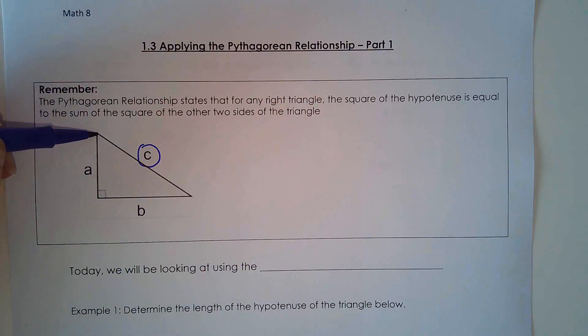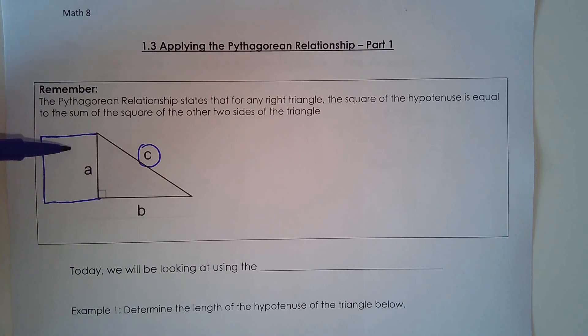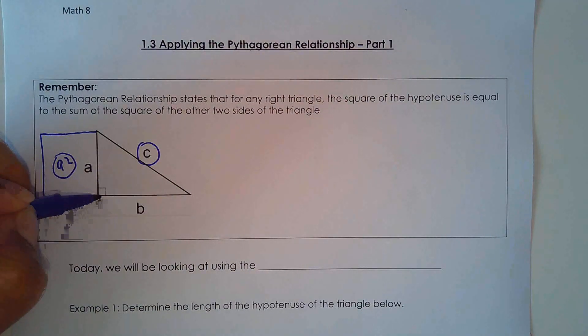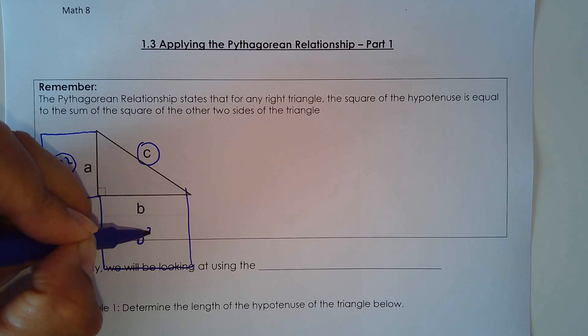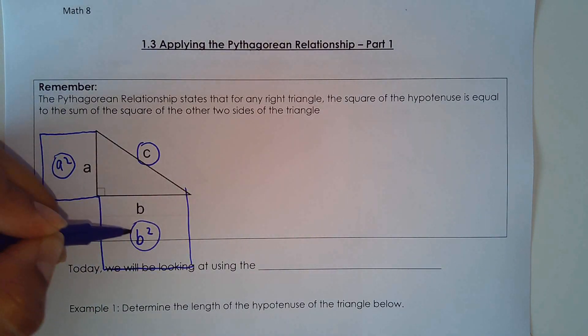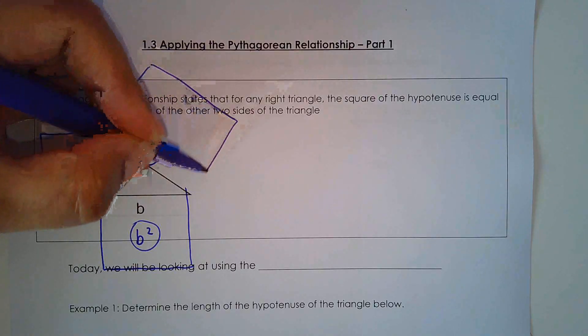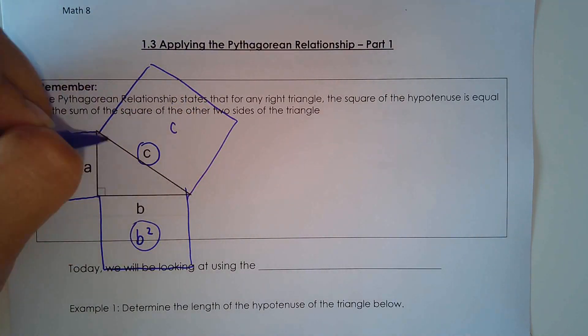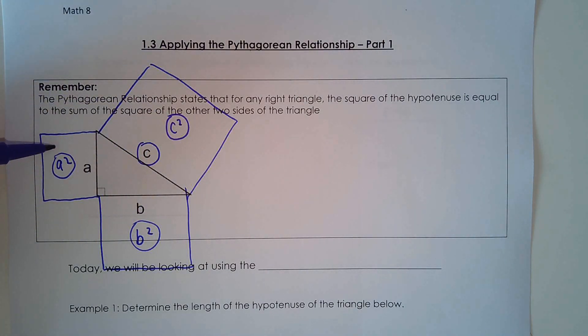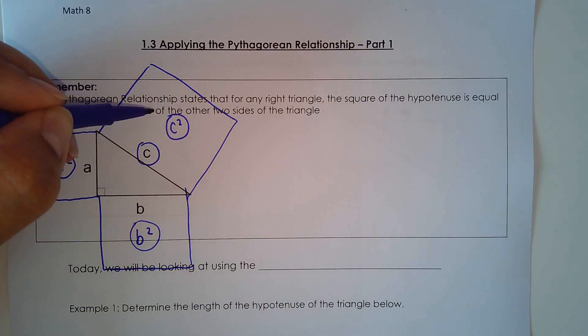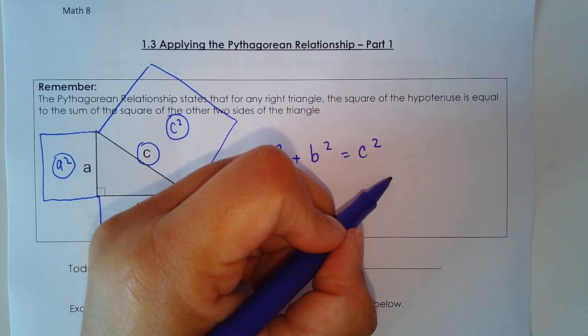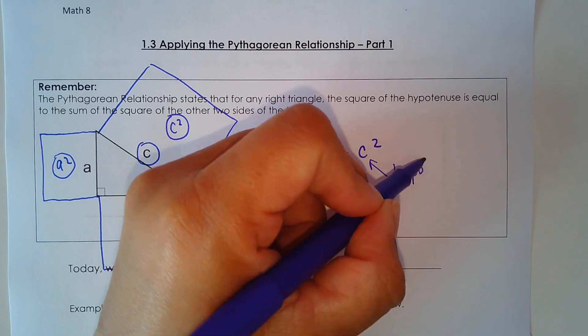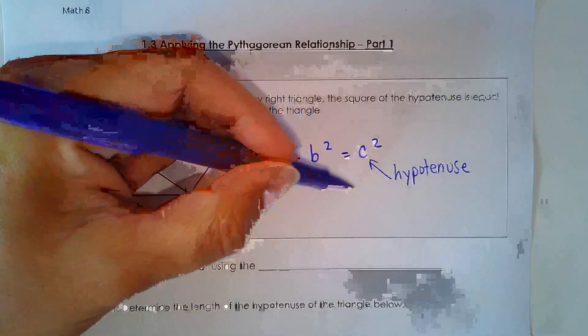But last week we learned that if we make a square off of the leg so we would call this A times A or A squared. So this is the area here and we add it to the area of this leg so B times B or B squared. When we add these two areas together we end up with the area for side C or C times C which is C squared. Right? So A squared plus B squared equals C squared. Where C is always the hypotenuse. And this is the Pythagorean formula.